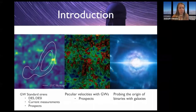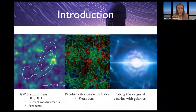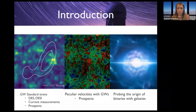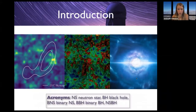In this talk, I will start by talking about gravitational wave standard sirens, tell you a few words about DES and DESI, then cover current measurements and future prospects. I'll also discuss measuring the peculiar velocity field with gravitational waves, and finally the origin of binaries emitting gravitational waves by looking at their host galaxies. Throughout this talk you'll see acronyms: NS for neutron star, BH for black hole, BNS for binary neutron star, BBH for binary black hole, and NSBH for neutron star black hole.